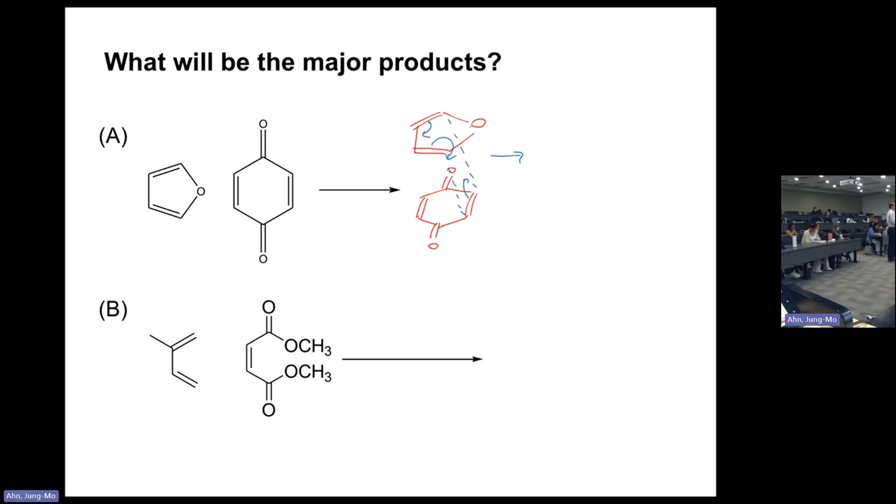After you align the molecules, we form a bond between these two carbons by sacrificing this pi bond. This pi bond moves over here making a bond, and this pi bond is used to make the other carbon-carbon bond.